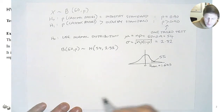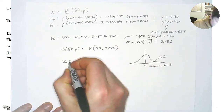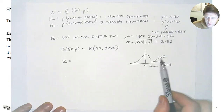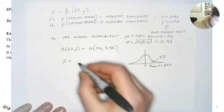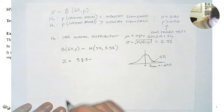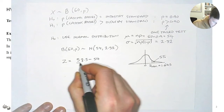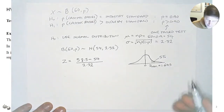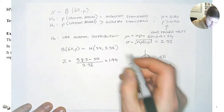Now we find the z value for our result. Z is the transformation to the standardized normal distribution: subtract the mean from our value and divide by the standard deviation. That equals 1.94.